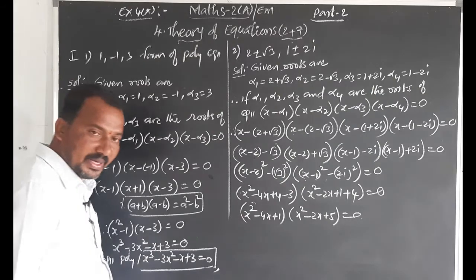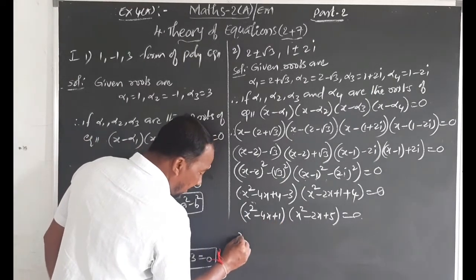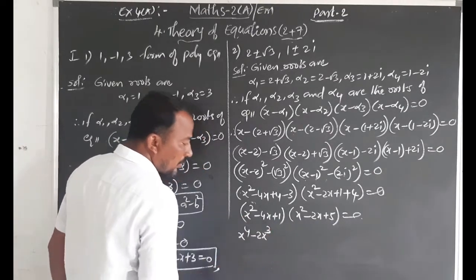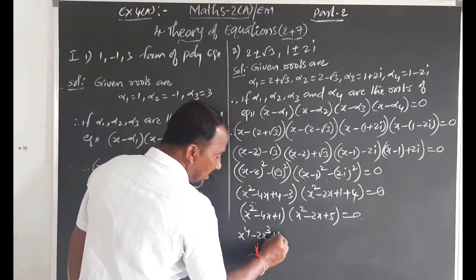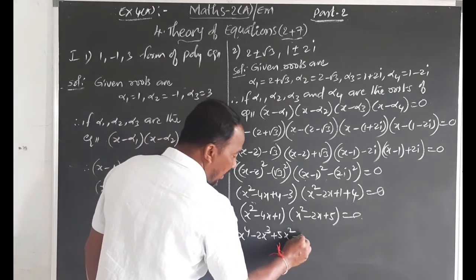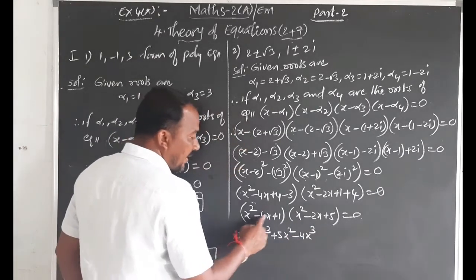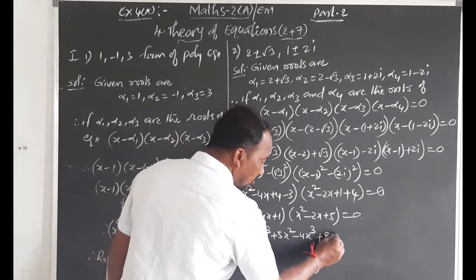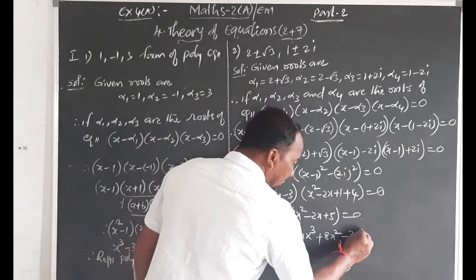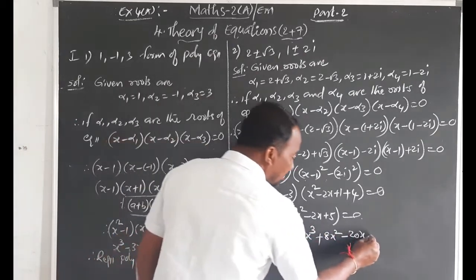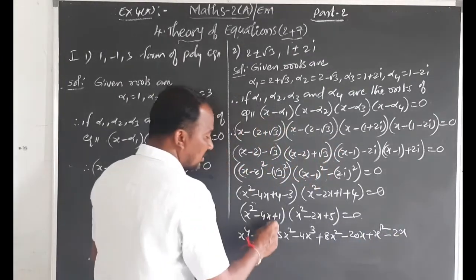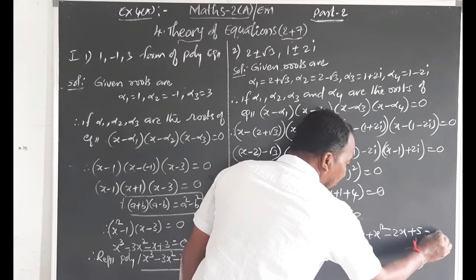Multiply out: x² · x² = x⁴, x² · (-2x) = -2x³, x² · 5 = 5x², (-4x) · x² = -4x³, (-4x) · (-2x) = +8x², (-4x) · 5 = -20x, 1 · x² = x², 1 · (-2x) = -2x, 1 · 5 = +5.